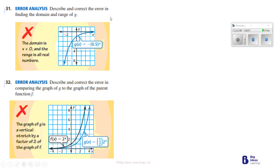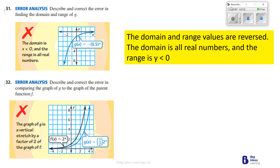Describe and correct the error in finding the domain and range of g. It says the domain is x less than 0 — that's wrong because domain goes on forever in both directions. The domain and range values are reversed. The correct answer: the domain is all real numbers, and the range is y less than 0.